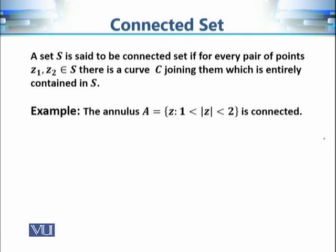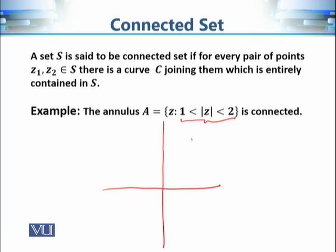Now let's consider another example: an annular region defined by 1 < |z| < 2. The condition |z| < 2 means all points strictly within a circle of radius 2, with the boundary not included. The condition |z| > 1 means nothing strictly inside the circle of radius 1 is included, giving an open annular region between the two circles.